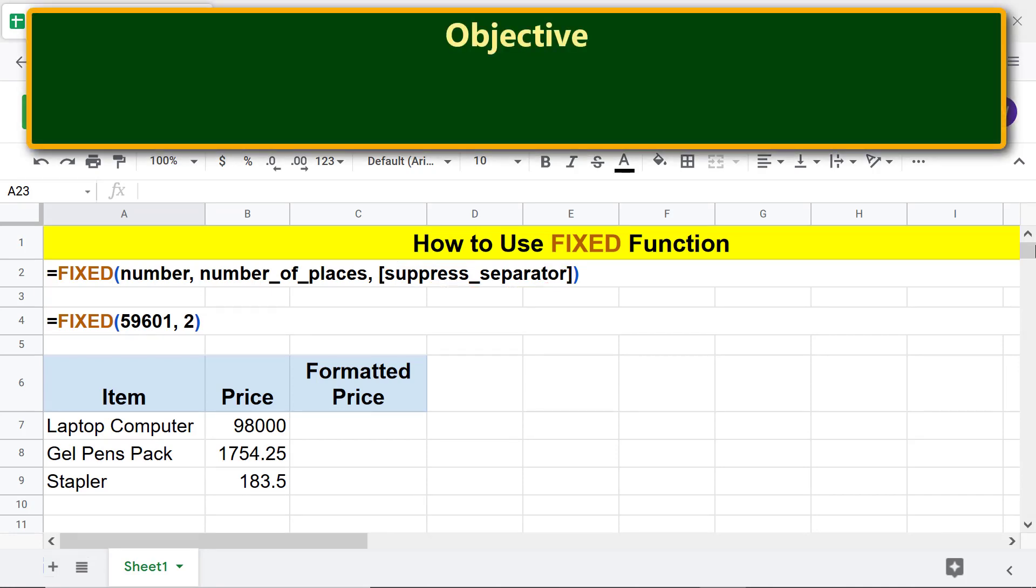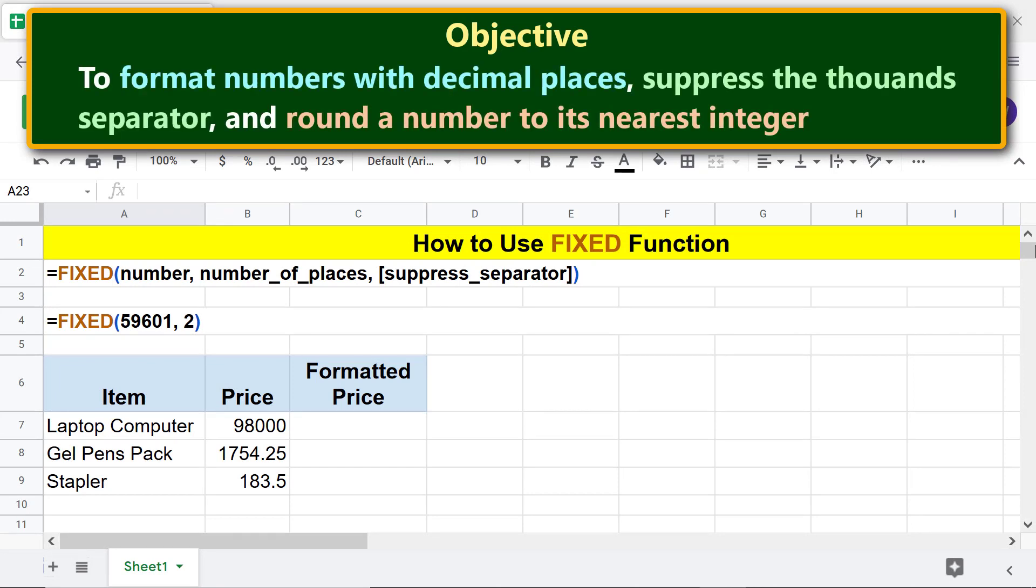Moving forward, here is an objective of using the FIXED function: to format numbers with decimal places, suppress the thousands separator, and round a number to its nearest integer.